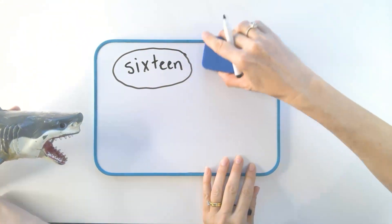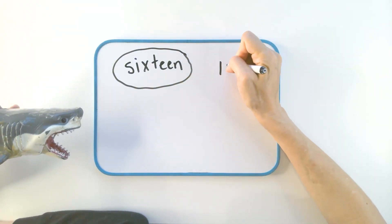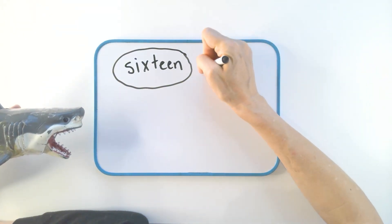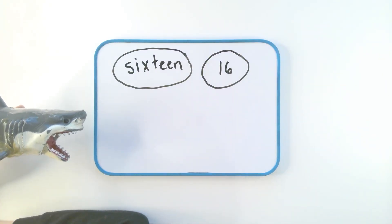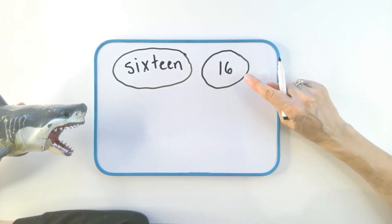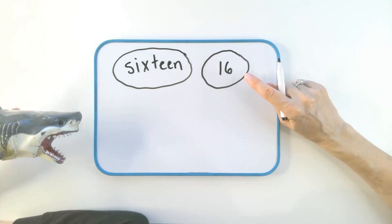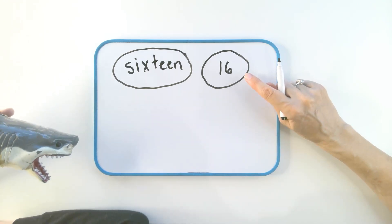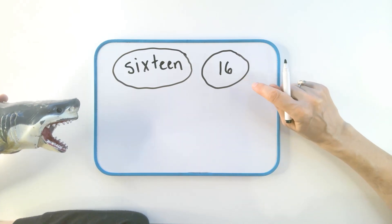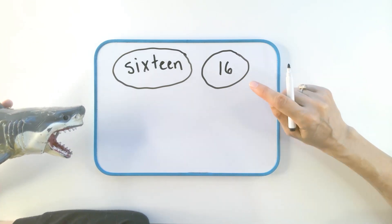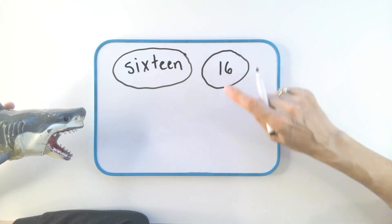In maths, we write numbers. This thing is a number. There's a really fancy word for number, but do you know what it is? Number blocks. No, I do love number blocks. Numeral. Can you say numeral? Numeral. That's right. And that's a fancy way of saying this is a number, or this is a numeral.